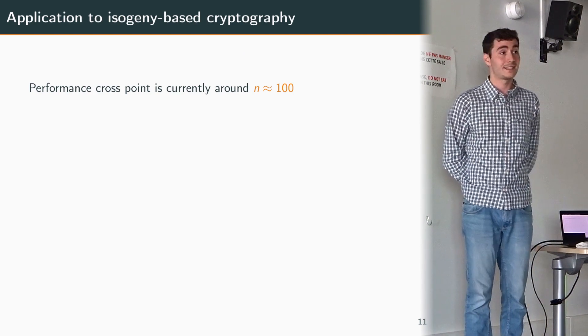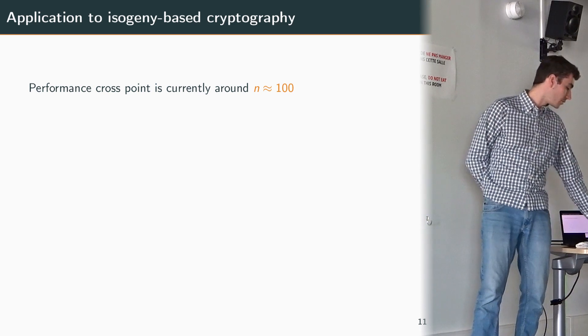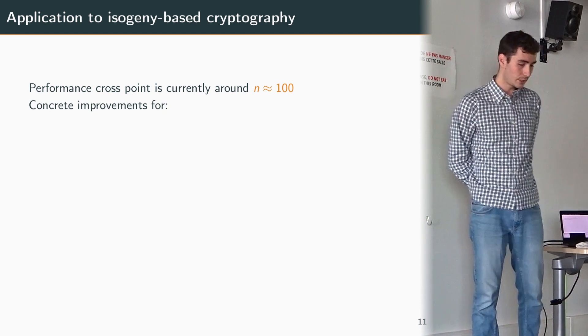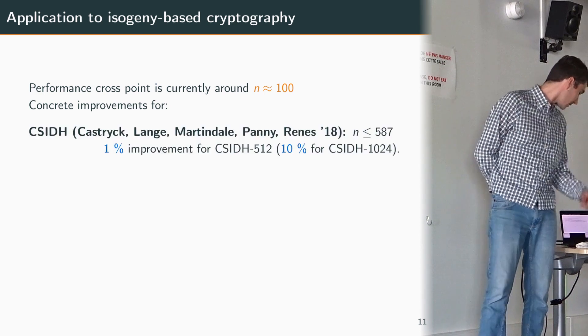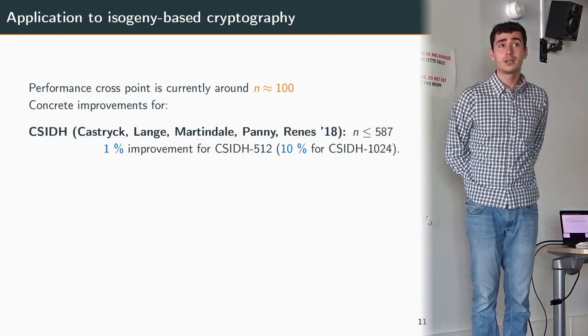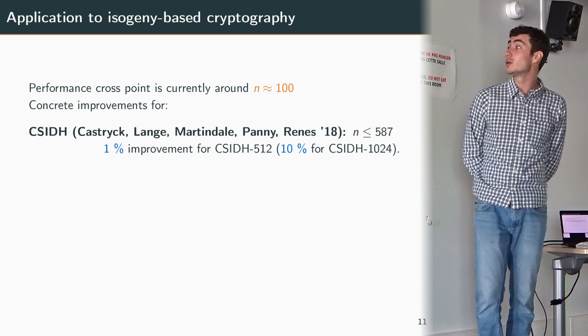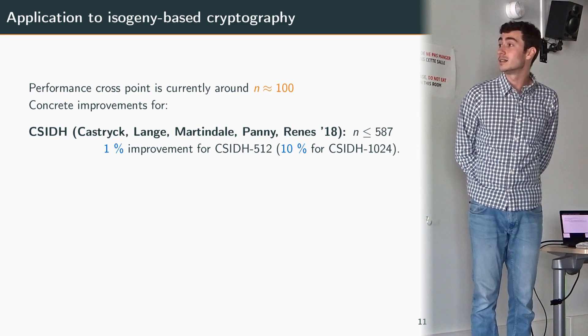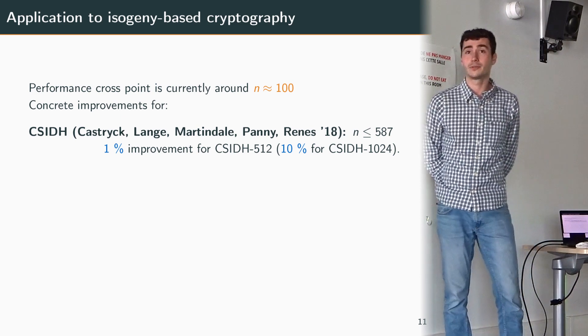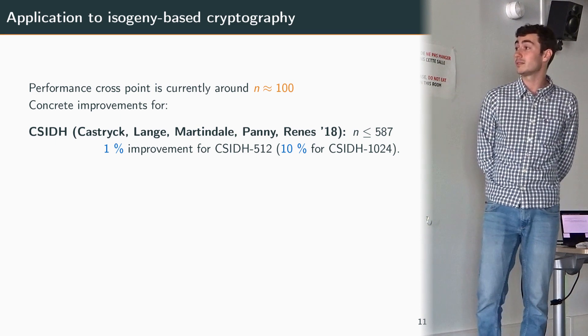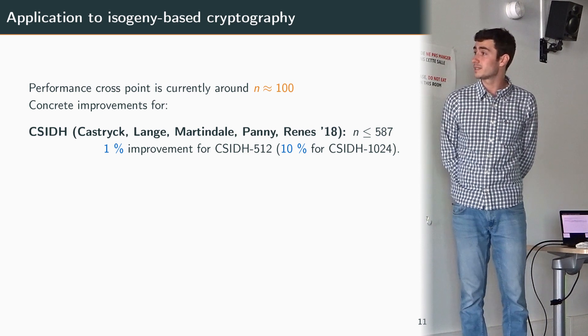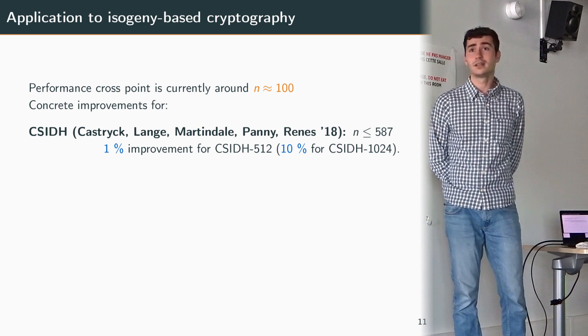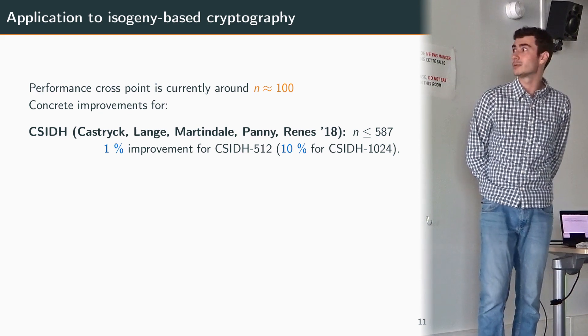But of course this is fine but we want to see what is the real impact on isogeny-based cryptography. So as I said we have this crosspoint of 100 and in fact this already means some improvement for several protocols. The most important of them is probably the CSIDH protocol which requires some computations of isogenies of degree going up to 587. With this we've made an implementation on which we witnessed a 1% improvement for the first level of security which is CSIDH-512, so this is not too impressive, but for the next level of security which is CSIDH-1024 we reached a 10% improvement which is already much more significant.